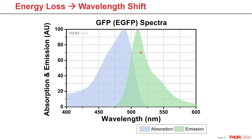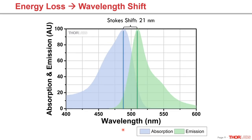We notice a shift between the absorption and emission spectra, caused by the vibrational relaxation or heat dissipation during the electron energy transitions. This shift in the peaks is termed the Stokes shift. For the GFP molecule, the Stokes shift is 21 nanometers.